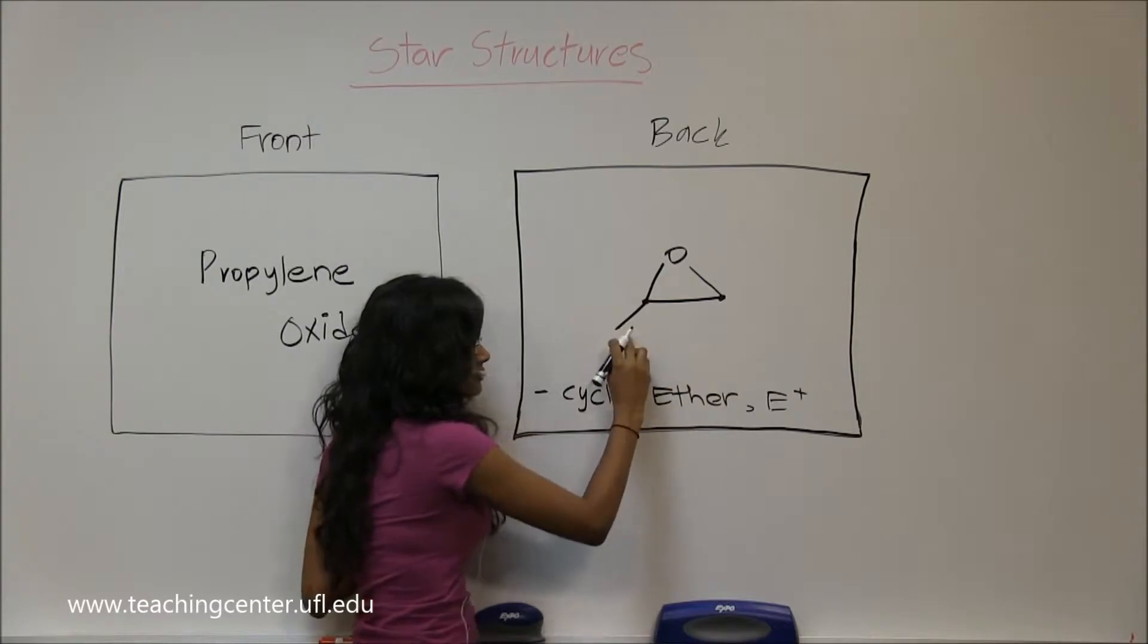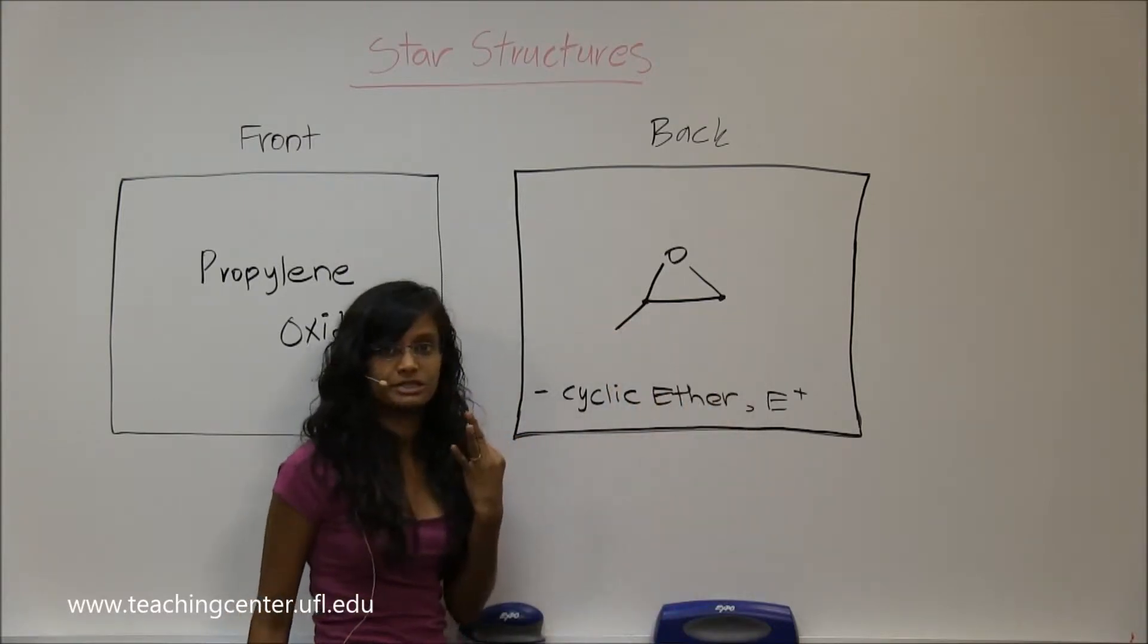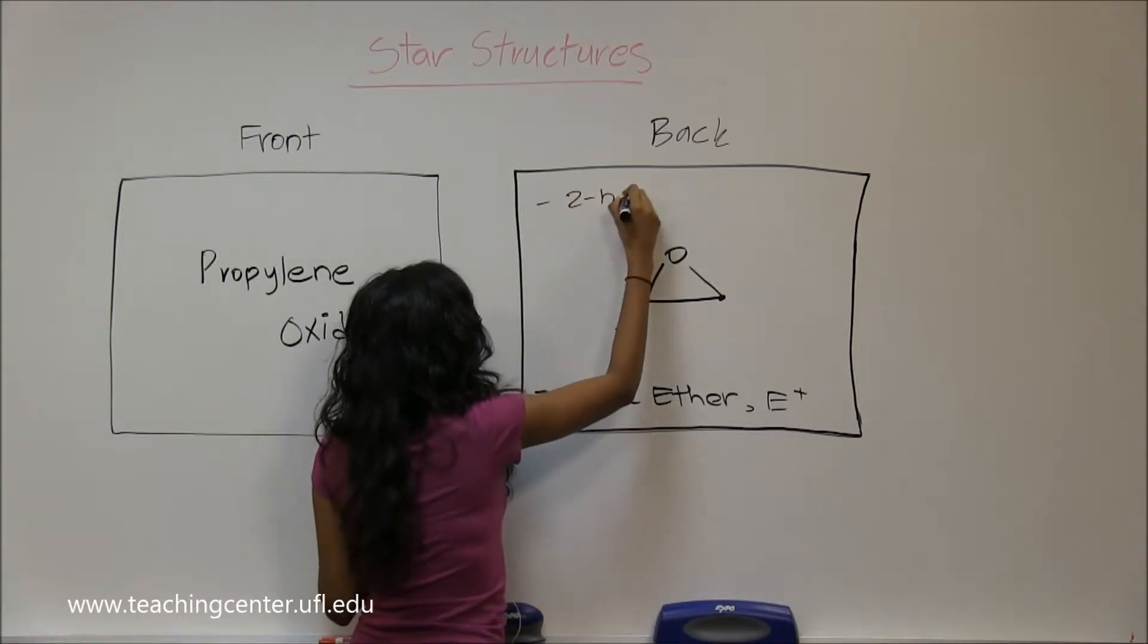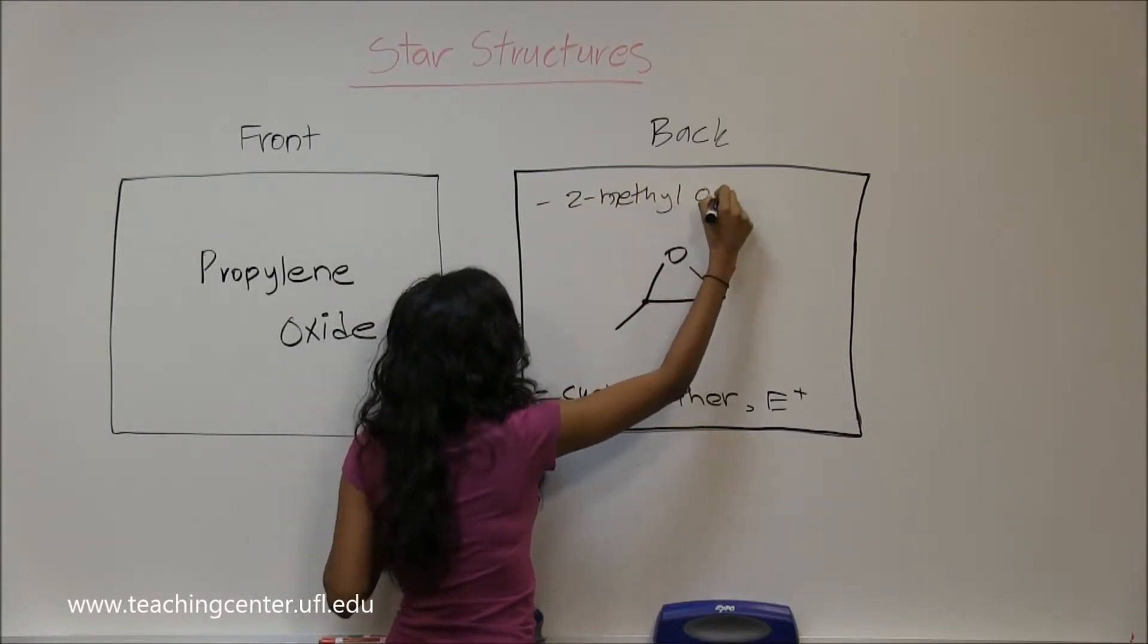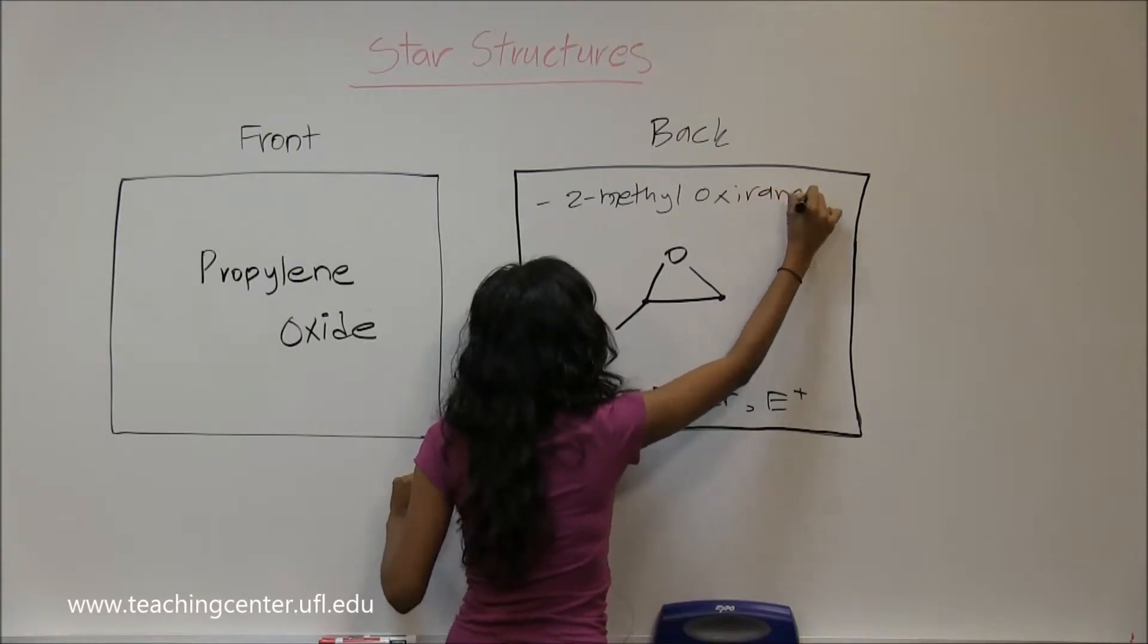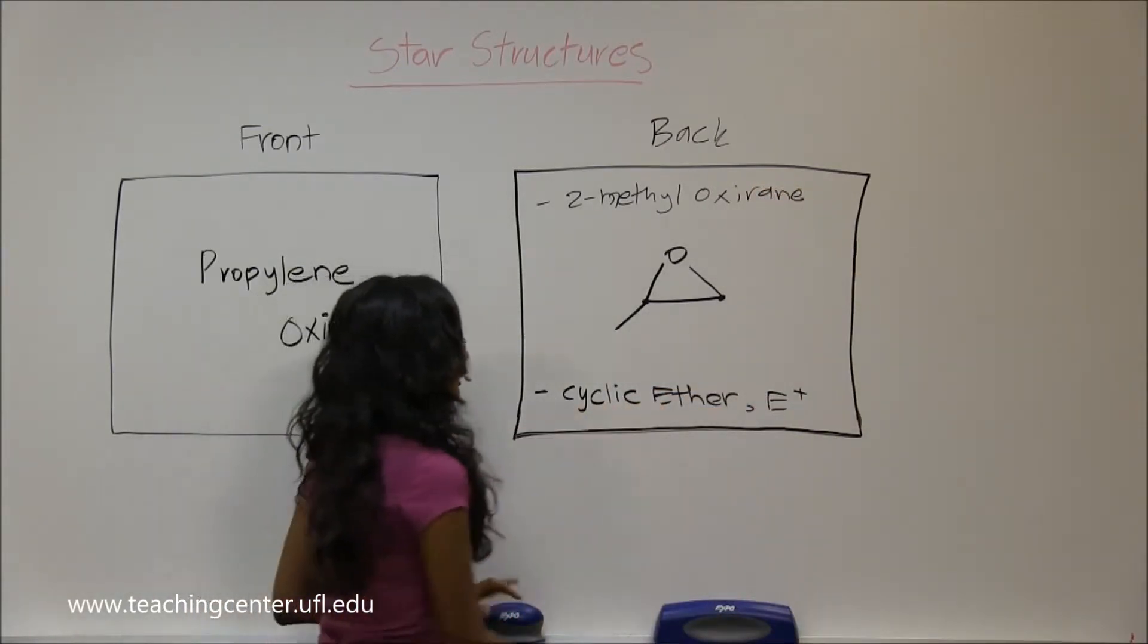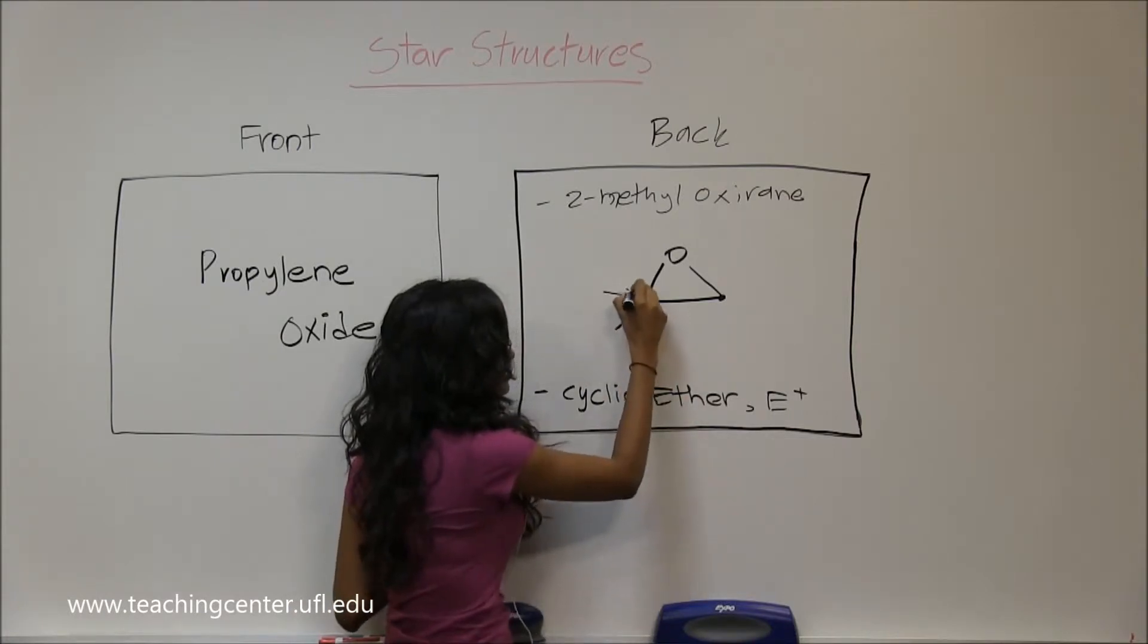You have a methyl so that you can have three carbons with the cyclic ether. You would call this 2-methyl oxirane for your IUPAC name. It's also a cyclic ether, and now you have two distinct sides where one is the anti-Markovnikov side and the other one is the Markovnikov side, so you're going to have two different types.